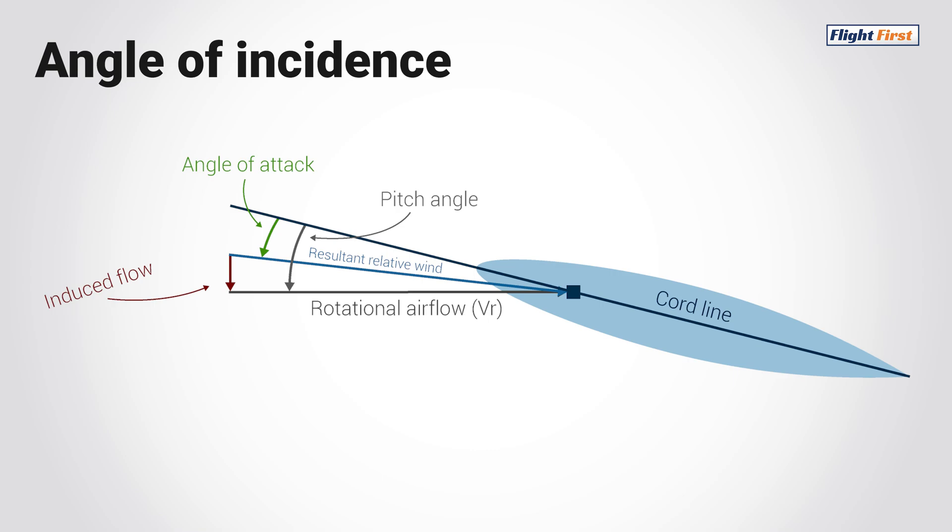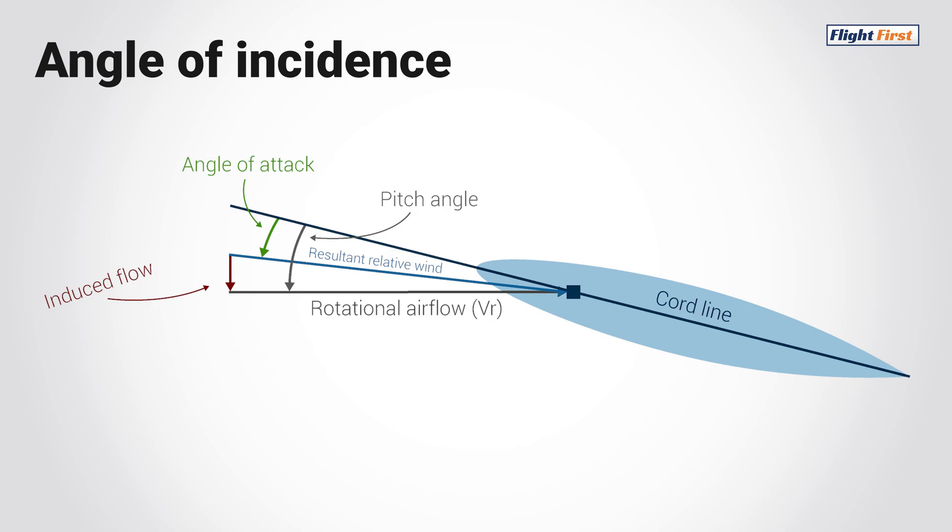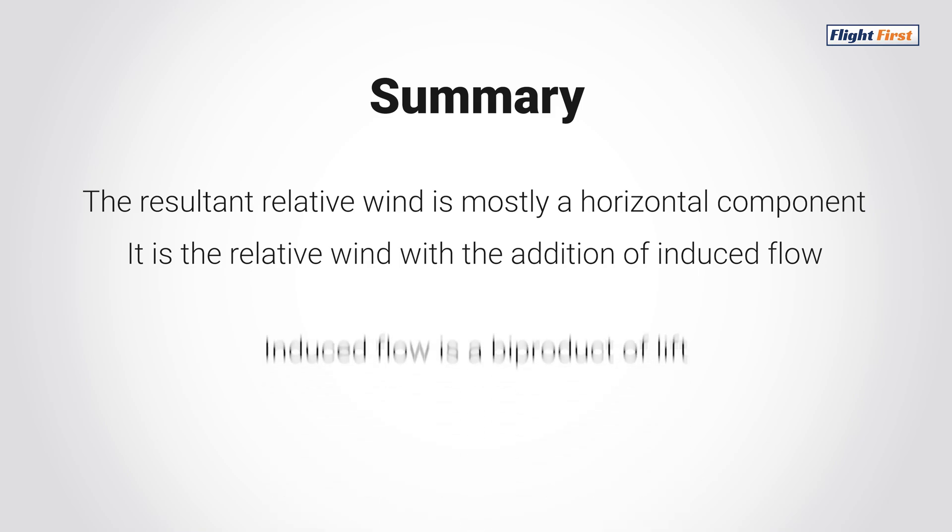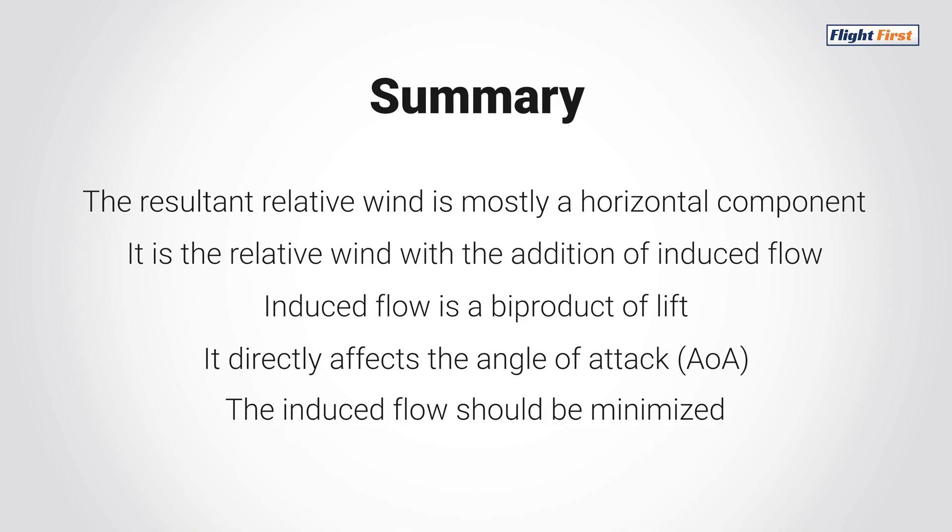In summary, the resultant relative wind is a mostly horizontal component which is caused by wind, the rotor system, and airspeed. The resultant relative wind is relative wind with the addition of induced flow. Induced flow can be thought of as a byproduct of lift and directly affects the angle of attack. We want to minimize the induced flow.